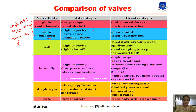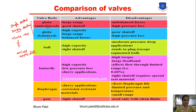One main disadvantage of the globe valve is the high pressure load. Next is the ball valve, which is generally used for on-off applications. Its advantage is high capacity and tight shutoff. The disadvantage is moderate pressure drop application and it tends to plug except in segmental form — so it is not recommended for moderate pressure drop applications.